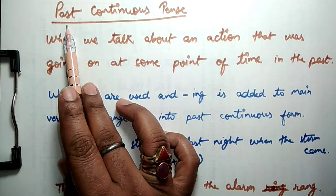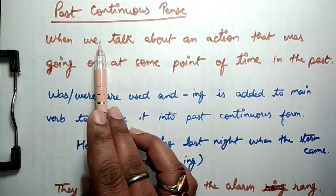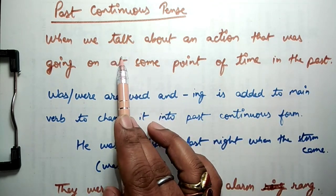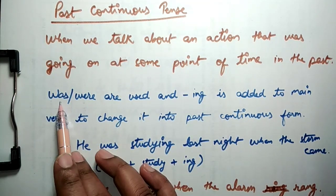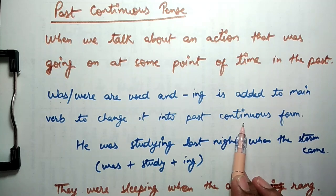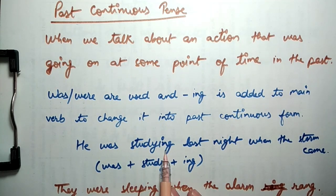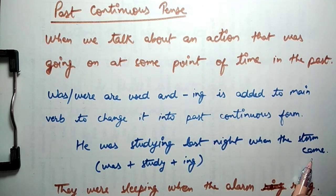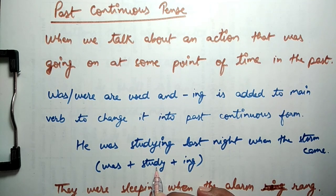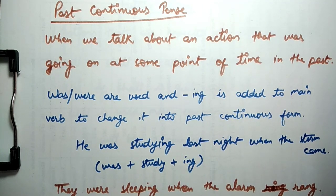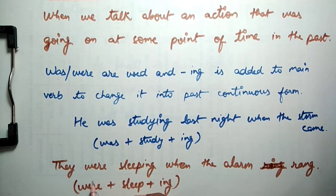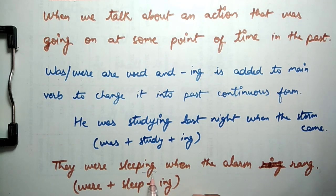If we talk about past continuous tense, then whenever we talk about an action that was going on at some point of time in the past, there past continuous tense is used. Was or were are used and ing is added to the main verb to change it to past continuous form. Example: he was studying last night when the storm came. So here was has been used and ing has been added to the verb that is study. Second example is they were sleeping when the alarm rang. Here were has been used and ing has been added to the verb sleep.